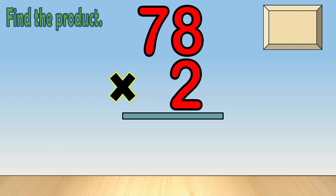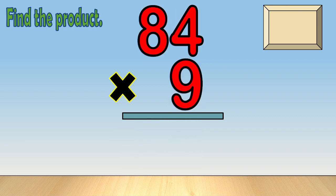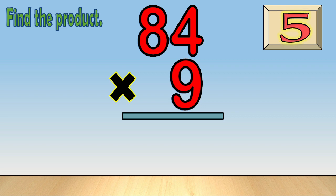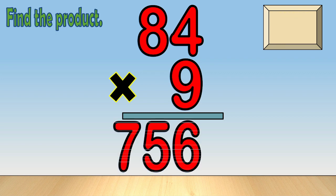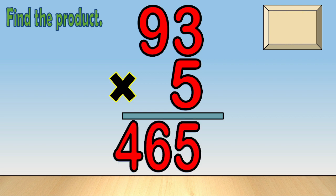Seventy-eight times two — times up, the answer is 156. Eighty-four times nine — times up, the answer is 756. Ninety-three times five — times up, the answer is 465.